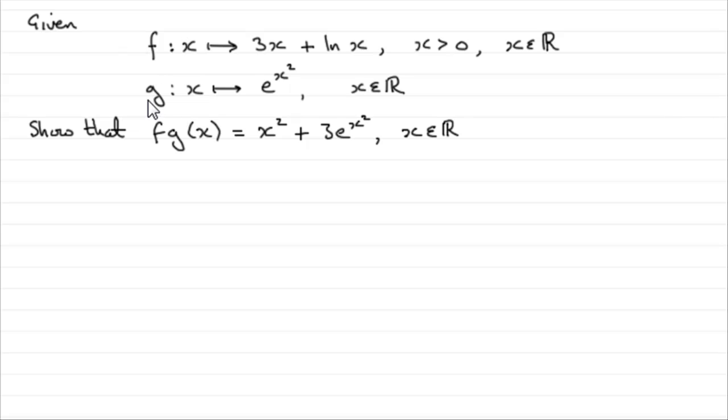And we have the function g, where g of x is such that x maps onto e to the x squared, where x is any real number. We've got to show that the composite function f of g of x is equal to x squared plus 3e to the power of x squared, for any real number x.